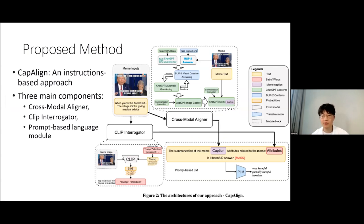To address these challenges, we proposed an instruction-based approach named KappaLine. Specifically, KappaLine has three core components: a cross-modal aligner, a CLIP interrogator, and a prompt-based language module. The cross-modal aligner serves as an image information extractor to generate insightful and informative captions from images in a zero-shot, multi-turn question-answering manner. The CLIP interrogator plays a crucial role in enhancing attribute representation, enriching the overall understanding of the content. The extracted captions and attributes are then integrated into the prompt-based language model to overcome the challenge of insufficient data. This slide showcases the comprehensive architecture of our proposed method, and subsequent slides will delve deeper into each component.